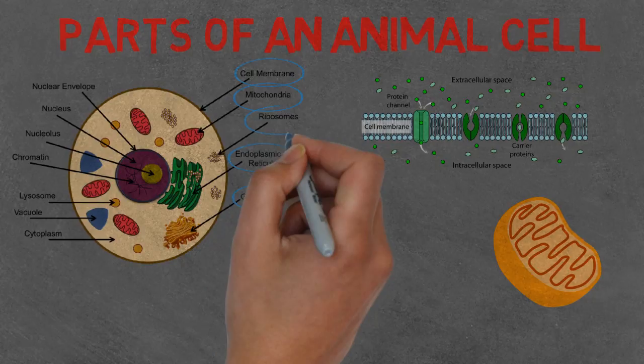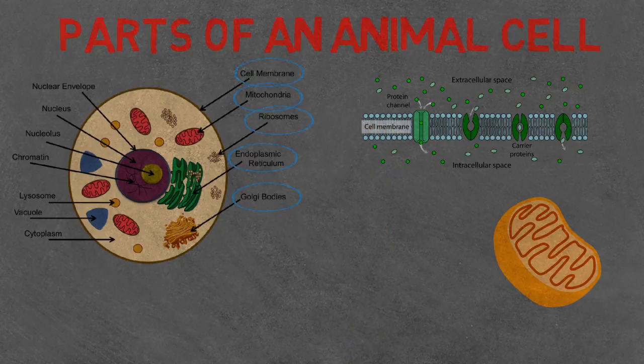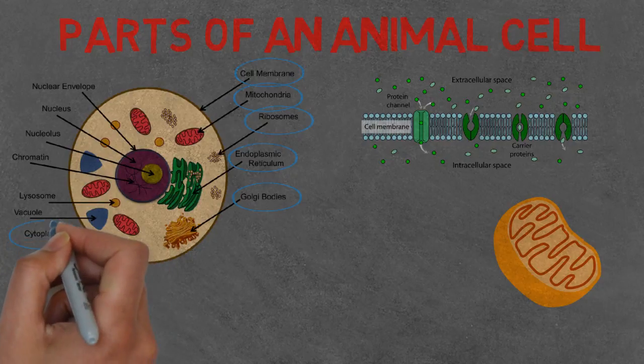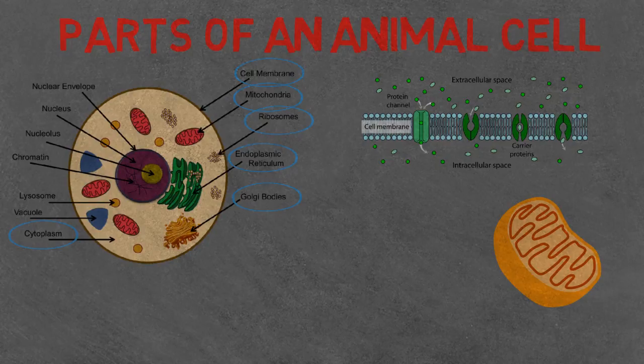We've got ribosomes. These assist in the process of protein synthesis. Cytoplasm. This is the space inside the cell excluding the nucleus and suspends all the contents of the cell.